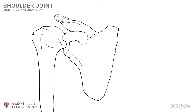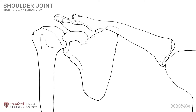On the next slide, we add back the clavicle and the sternum to look at the joints of the shoulder region. The clavicle is a long bone that is fairly unique in that it sits horizontally, rather than in a vertical orientation like many other long bones such as the humerus, which sits vertically in the anatomical position.